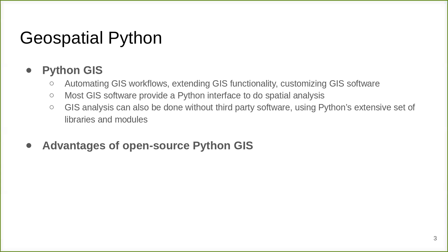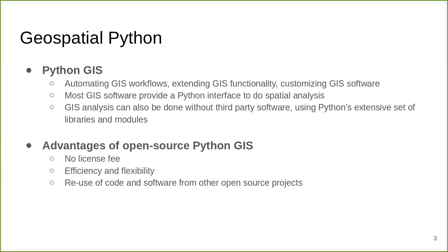Open-source GIS with Python has many advantages. For example, developing geospatial solutions with open-source components does not require expensive software license fees, which makes it a cost-effective solution. Python is also efficient and flexible, and is used for a wide range of big data analysis tasks. Reusing code from other open-source projects can save time and effort. With an extensive collection of libraries, it is possible to combine different software components from within Python.